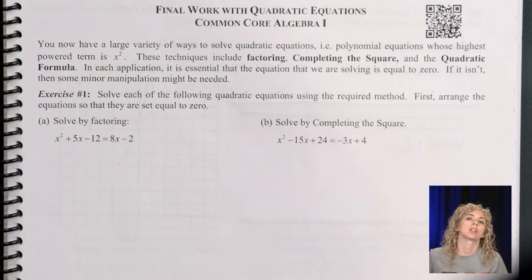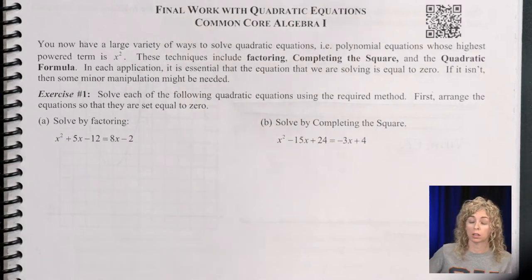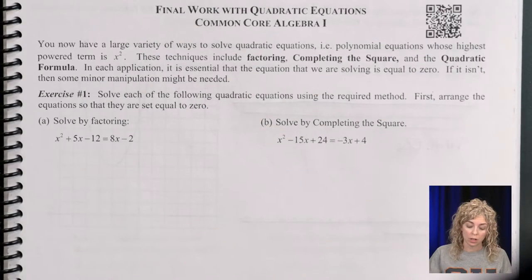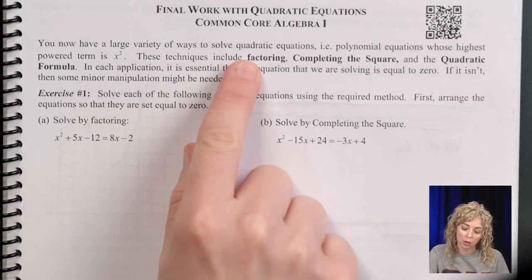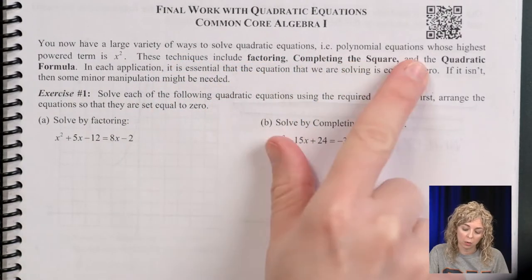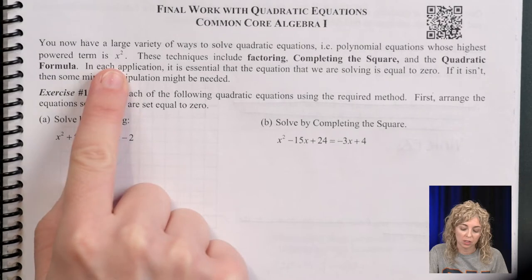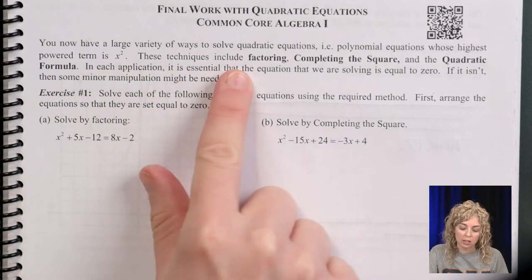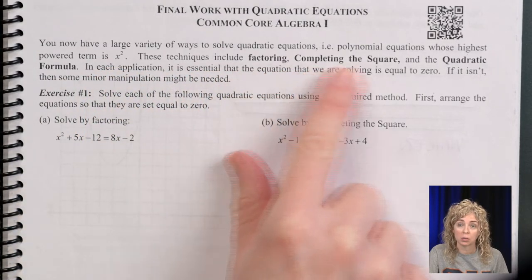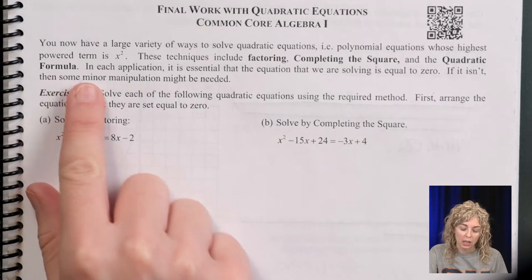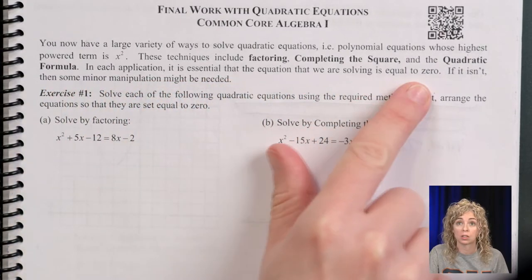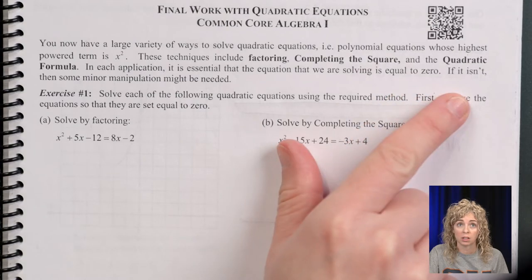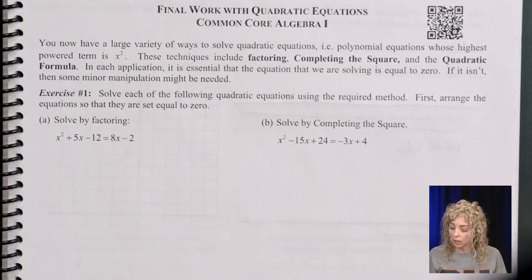Today's the last day that we're going to take a look at a quadratic equation or function. So reading at the top, it says you now have a large variety of ways to solve a quadratic equation or polynomial equations whose highest power term is to the second power. These techniques include factoring, completing the square, and quadratic formula. In each application it is essential that the equation we are solving is equal to zero.